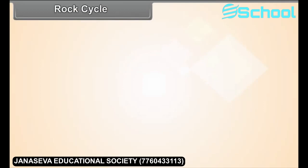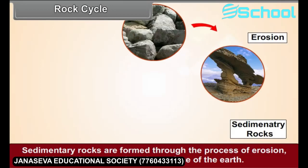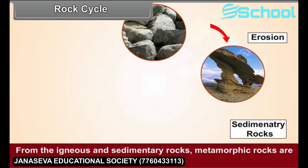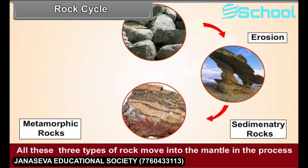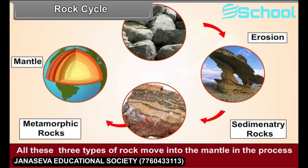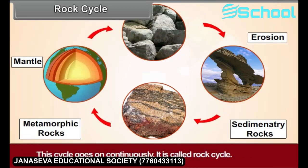Rock cycle: Sedimentary rocks are formed through the processes of erosion out of the rocks exposed on the surface of the Earth. From igneous and sedimentary rocks, metamorphic rocks are formed. All three types of rock move into the mantle in the process of plate consumption. They come to the surface again in the form of primary igneous rocks. This cycle goes on continuously and is called the rock cycle.